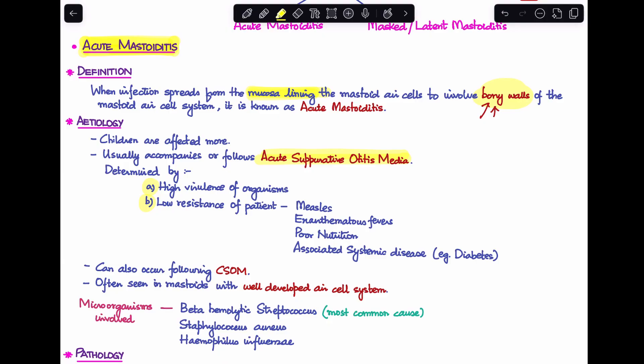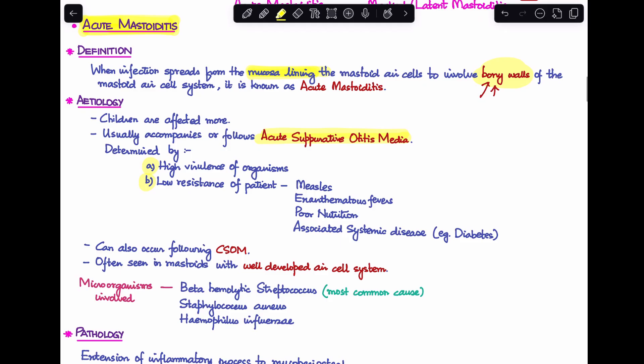In high virulence or low resistance, acute suppurative otitis media can progress to acute mastoiditis. Acute mastoiditis is often seen in mastoids with a well-developed air cell system. The most common microorganism involved is beta hemolytic streptococcus. Other organisms can be Staphylococcus aureus or Haemophilus influenzae.